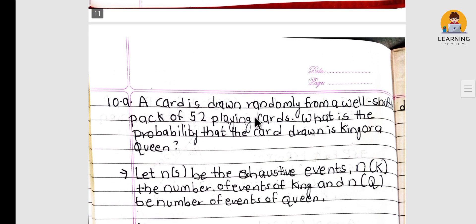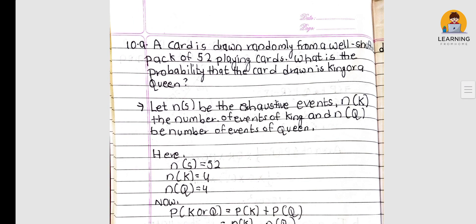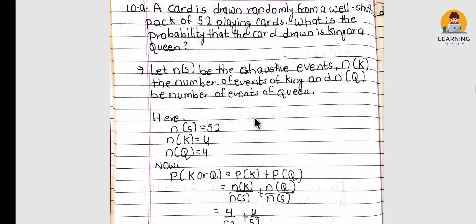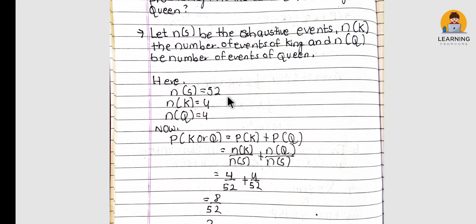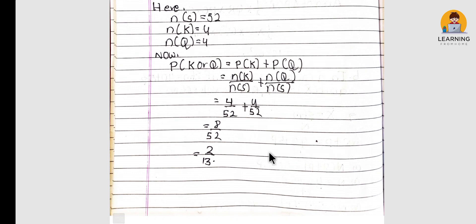A card is drawn randomly from a well-shuffled pack of 52 playing cards. What is the probability that the card is a king or a queen? Total playing cards = 52, number of kings = 4, number of queens = 4. So probability = (4 + 4) / 52 = 8/52 = 2/13.